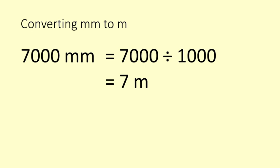What about if we wish to convert from millimetres to metres? Well, it's just the opposite. We go 7000 millimetres divided by 1000 is 7 metres.